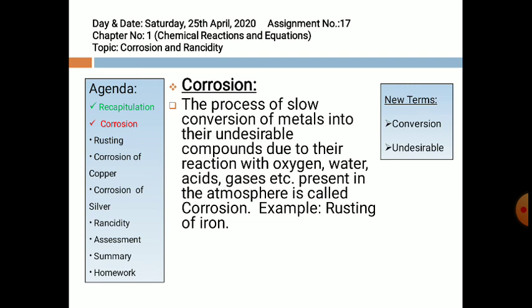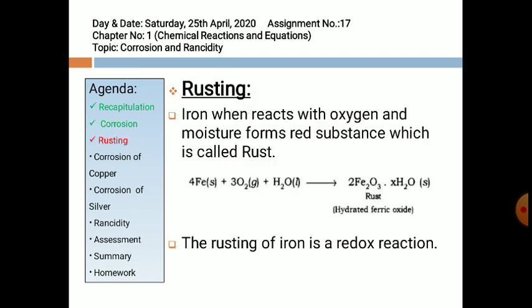Example: Rusting of Iron. Iron, when it reacts with oxygen and moisture, forms a red substance called rust. The chemical equation is: Fe + O₂ + H₂O (water vapors or moisture present in air) react to form rust, Fe₂O₃·xH₂O, also known as hydrated ferric oxide.